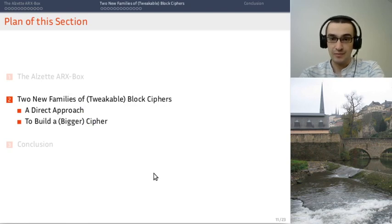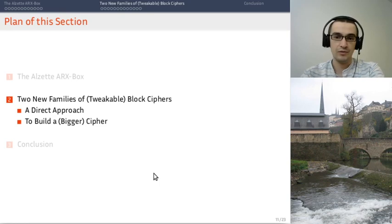What more can we do with ALZET? Well, we can design new block ciphers, possibly with a tweak. First, let's look at a very simple way of building a block cipher using a 64-bit ARX box.